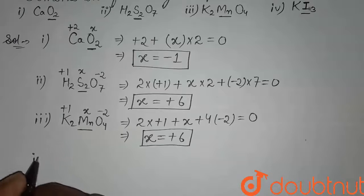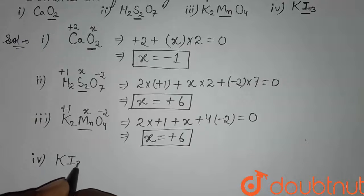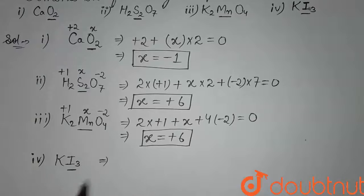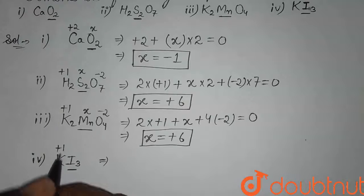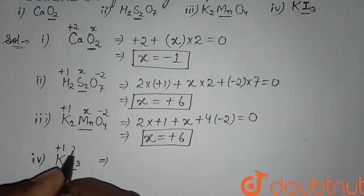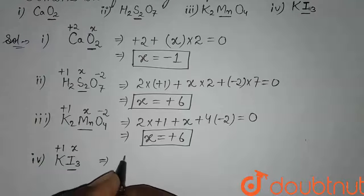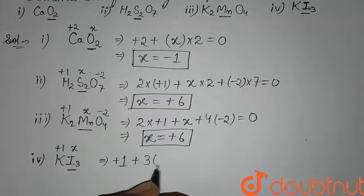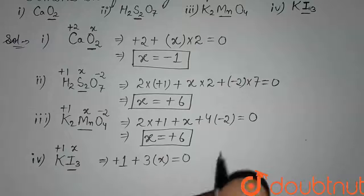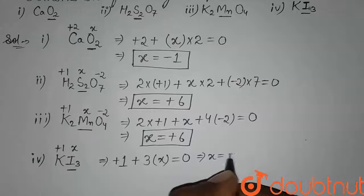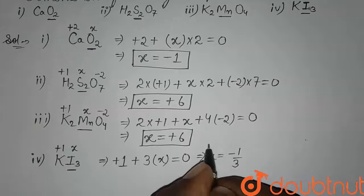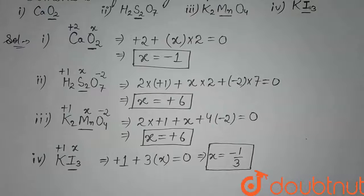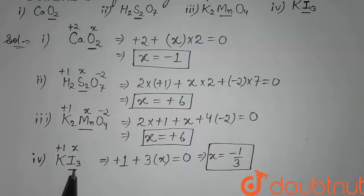Now in the fourth compound, KI3, we have to find the oxidation state of iodine. The oxidation state of potassium is always +1. Let's suppose the oxidation state of iodine is X. Therefore: +1 + 3X = 0. On calculating this, we get X = -1/3. So the oxidation state of iodine in KI3 is -1/3. These are our answers, solved one by one. Thank you.